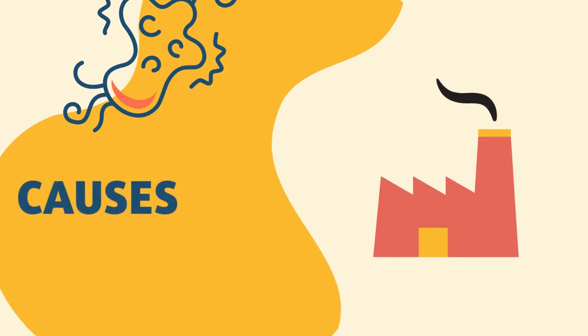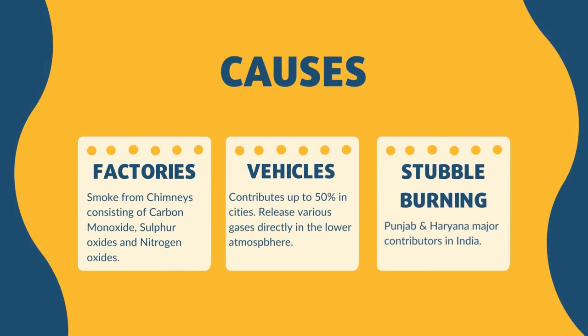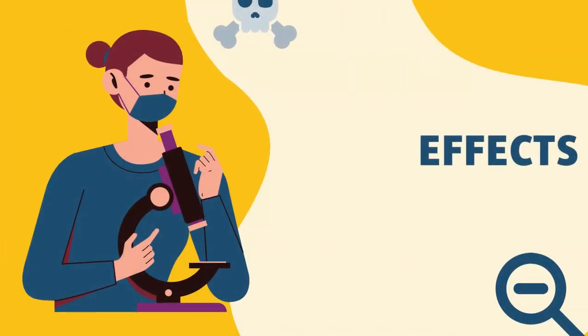The causes of smog include using coal as a fuel, vehicular and industrial emissions, overpopulation and excessive consumption, excessive waste production, and fireworks. These can be divided into three broad categories. Factories emit carbon monoxide, sulfur oxides and nitrogen oxides from chimneys. Vehicles contribute up to 50% in cities as they release gases directly into the lower atmosphere. In states like Punjab and Haryana, stubble burning is one of the major contributors to smog.